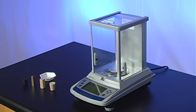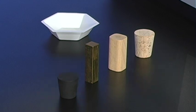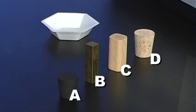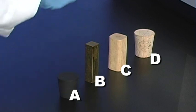Let's test our balance. We'll be weighing four items: a rubber stopper, a metal bar, a wood block, and a cork. Let's label them A, B, C, and D.